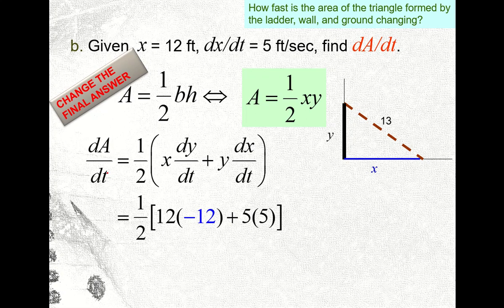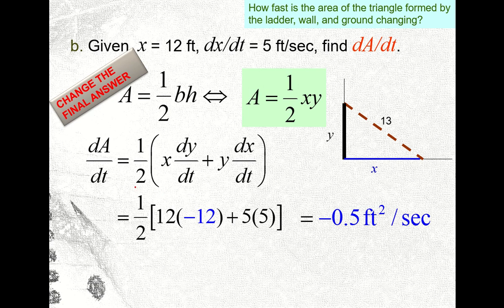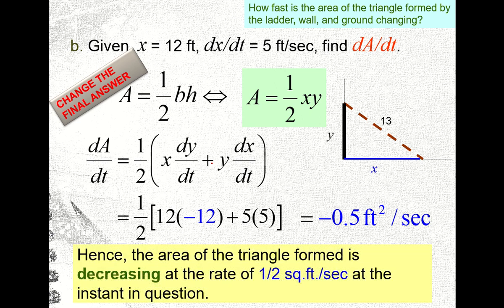Substituting all given and calculated values — x equals 12, dy/dt equals negative 12, y equals 5, and dx/dt equals 5 — into dA/dt equals (1/2)[x(dy/dt) + y(dx/dt)], we get (1/2)[12(−12) + 5(5)], which gives a rate of change of the area equal to negative 0.5 square feet per second. Hence the area of the triangle is decreasing at the rate of one-half square foot per second at the instant in question.